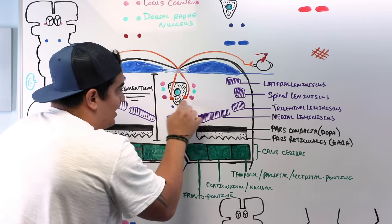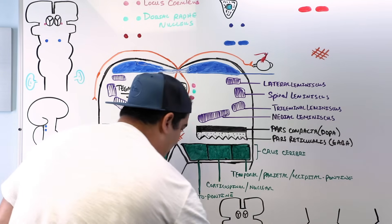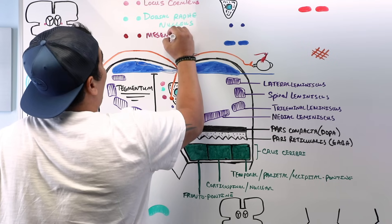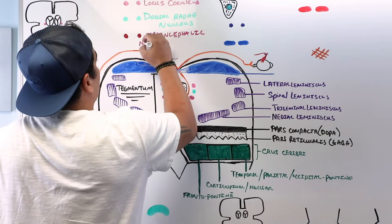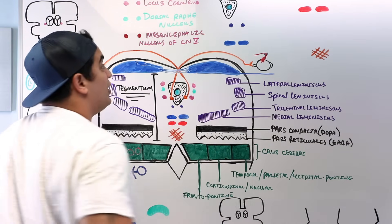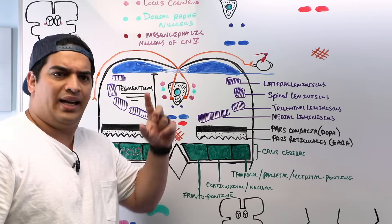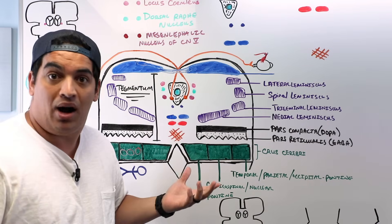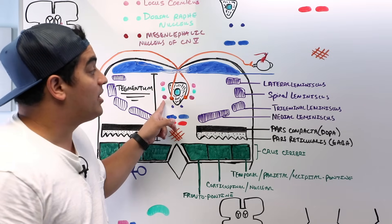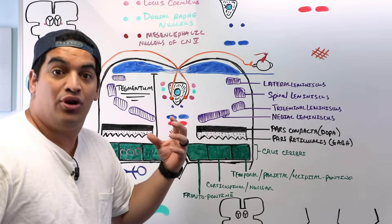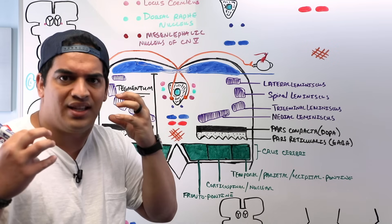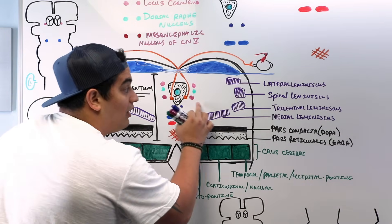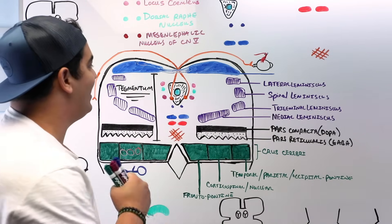Moving more ventral are the maroon-colored neurons — the mesencephalic nucleus of the trigeminal nerve (cranial nerve V). This is the midbrain portion of the trigeminal nucleus, which picks up proprioceptive information (position sense of muscles, tendons, and joints) from the mastication muscles and relays it up through the trigeminal lemniscus.